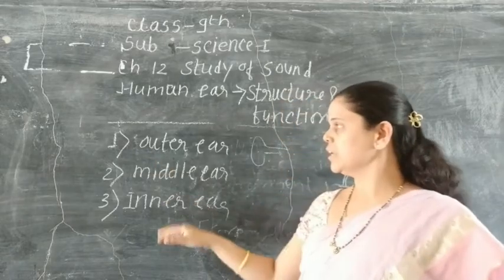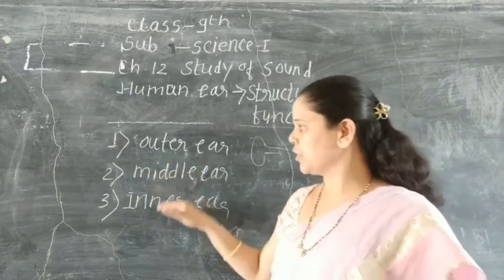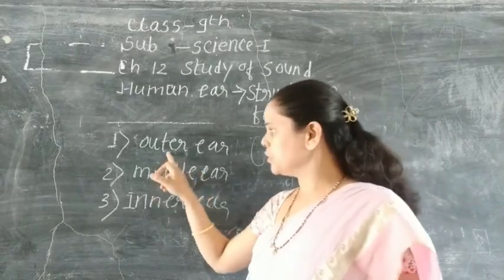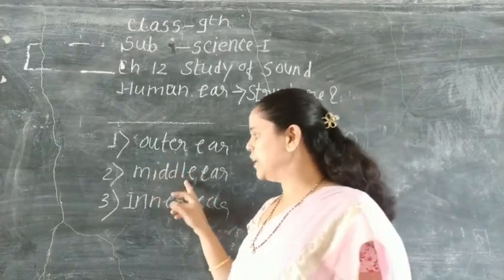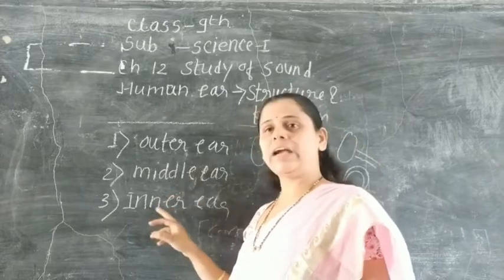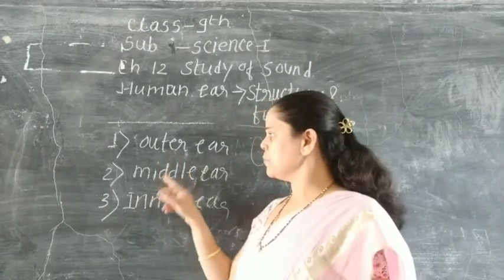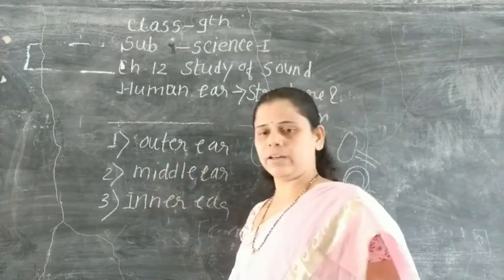In the human ear, there are three parts: the outer ear, middle ear, and inner ear.